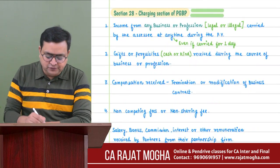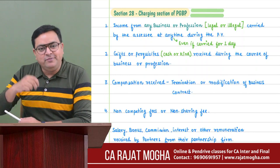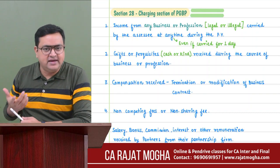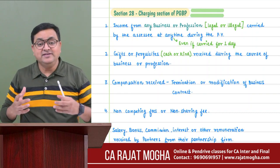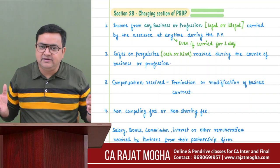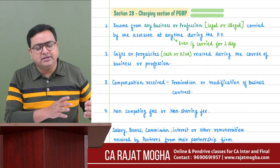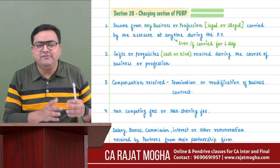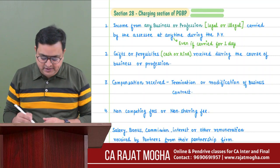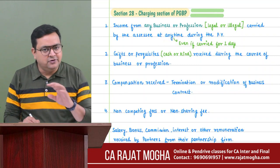The first point is easy: income from any business or any kind of profession carried by the assessee during the previous year is taxable as PGBP. 'Any business' means any business - it could be legal or illegal. It is not necessary that the business be carried for the entire 365 days; even if carried for a single day during the previous year, that income will be your PGBP income.